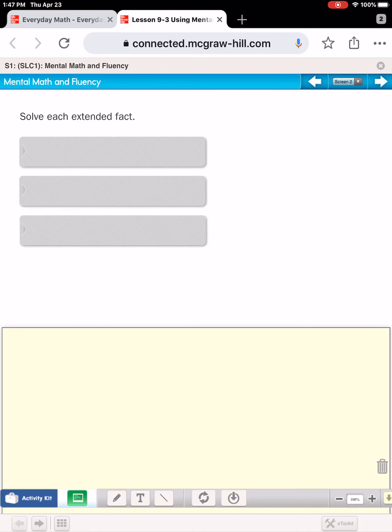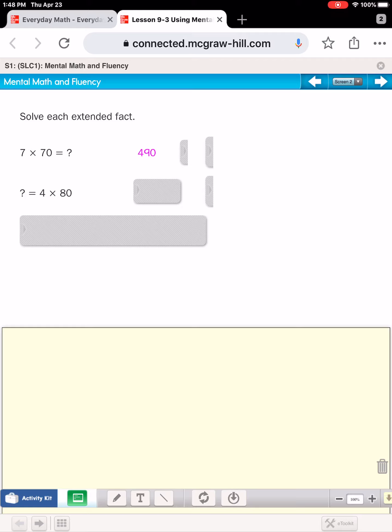Let's look at these. 7 times 70 equals what? 7 times 70 equals 490. What is 4 times 80? 4 times 8 is 32, so 4 times 80 is 320.